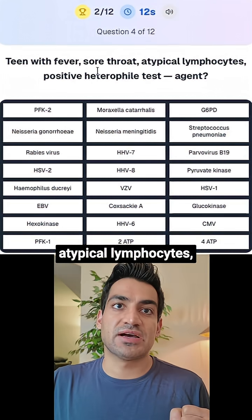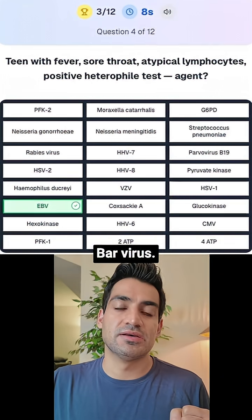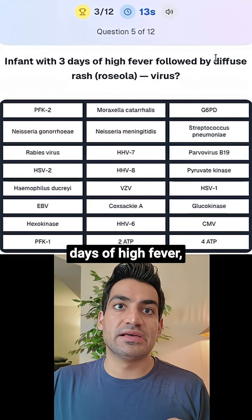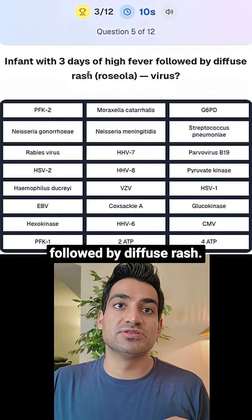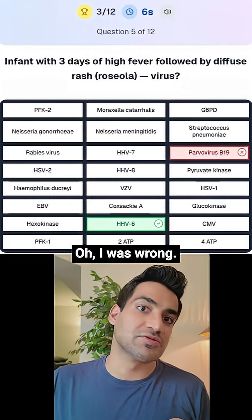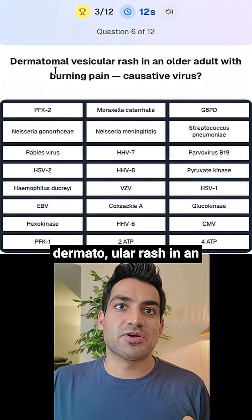Teen with fever, sore throat, atypical lymphocytes, positive heterophile test — that's Epstein-Barr virus. Infant with three days of high fever followed by diffuse rash — I thought roseola but I was wrong, it's HHV-6. Dermatomal vesicular rash in an older patient — that's VZV.